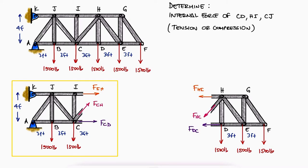If we use the left side of the structure, we would need to find the reaction forces at A and K first. If we take the right side of the cut, we have all the external loads and only three unknown variables, the variables we're looking for.